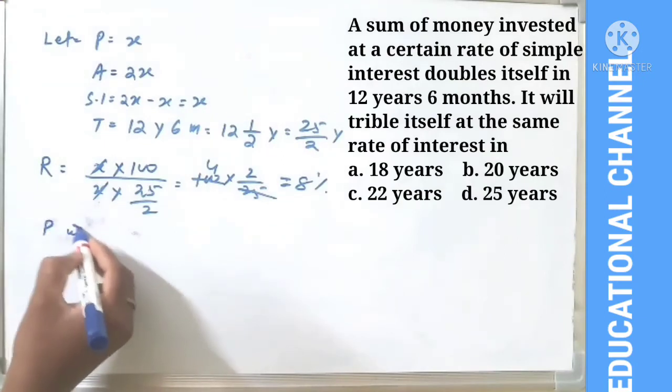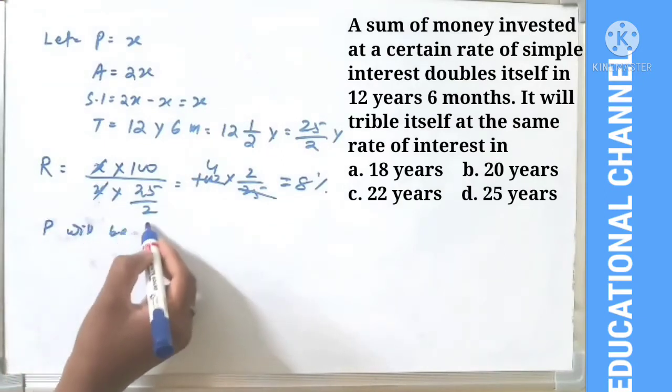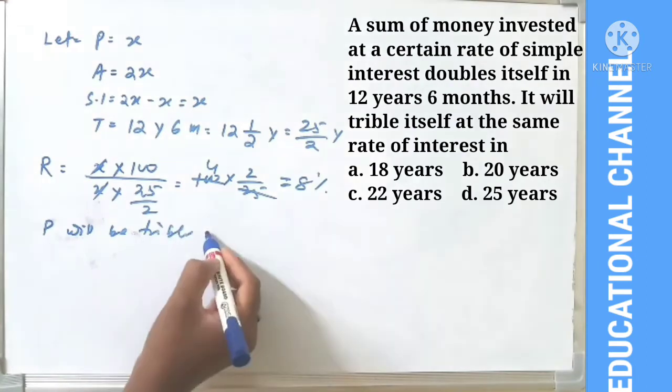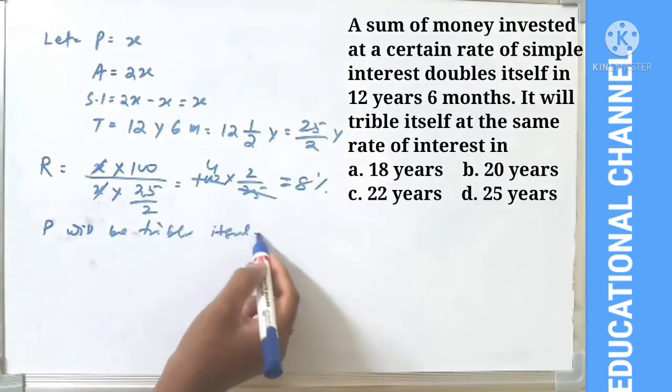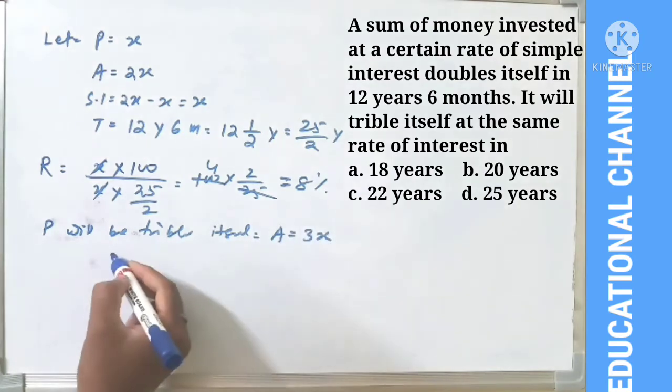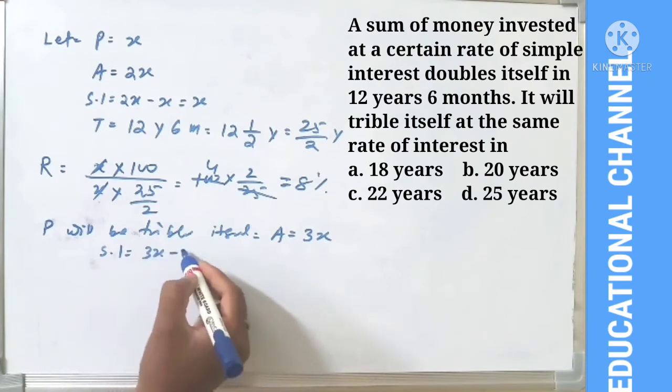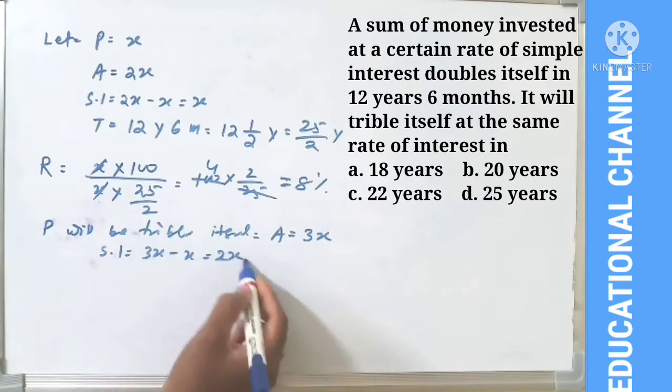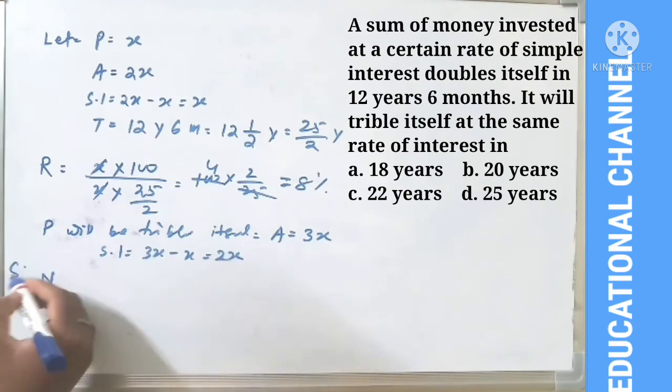Now for the tripling scenario: the amount A = 3x, so simple interest SI = 3x - x = 2x.